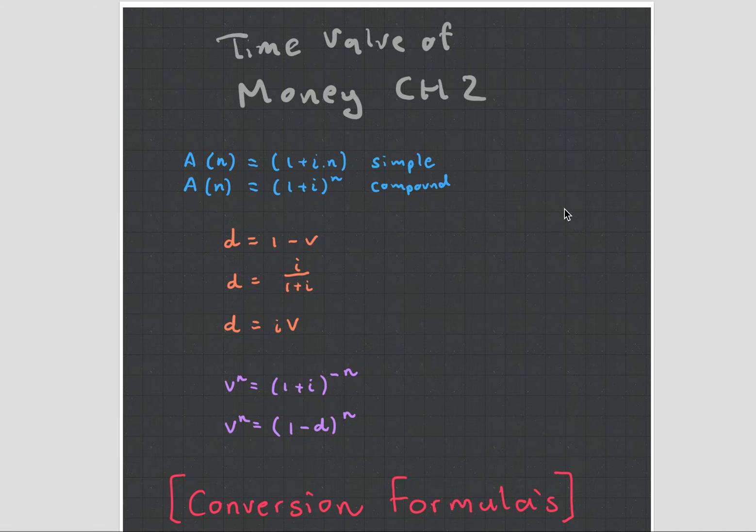What these models are saying is that the time value of money is equal to a function of interest and time. So the greater the interest is, the more money is going to be worth in the future. And the value of time—the more time you have, the more the money is going to be worth.